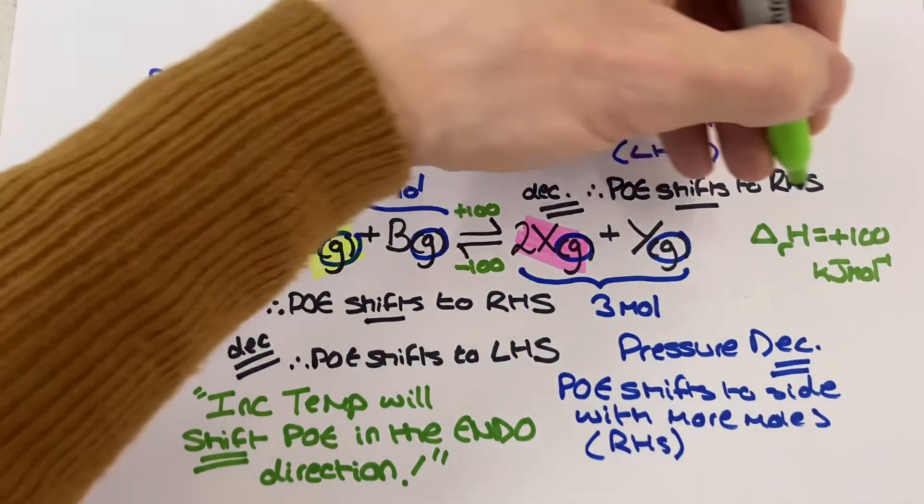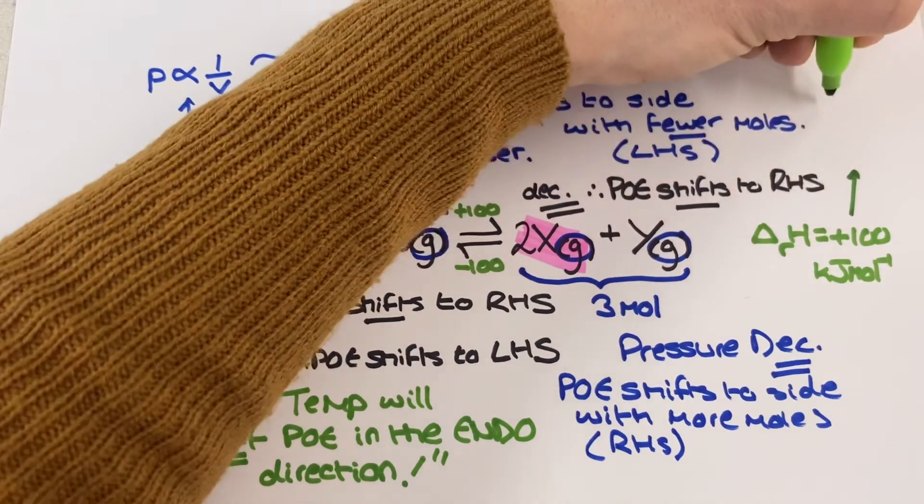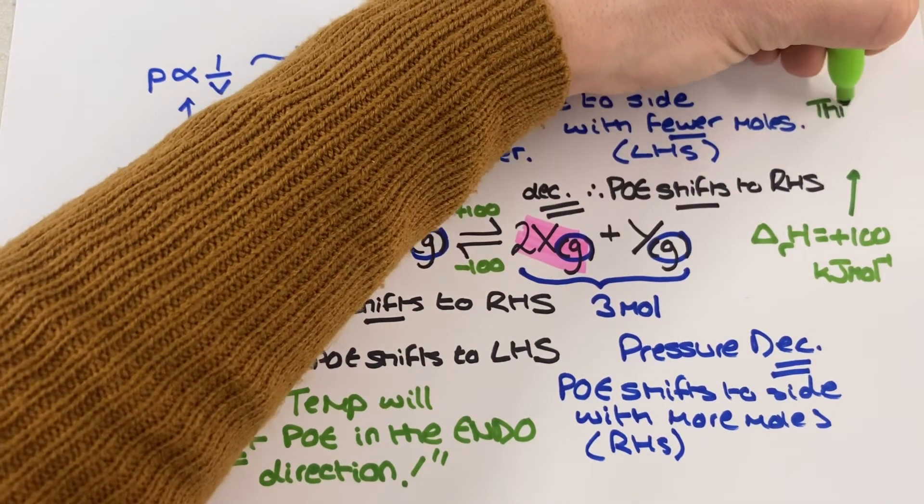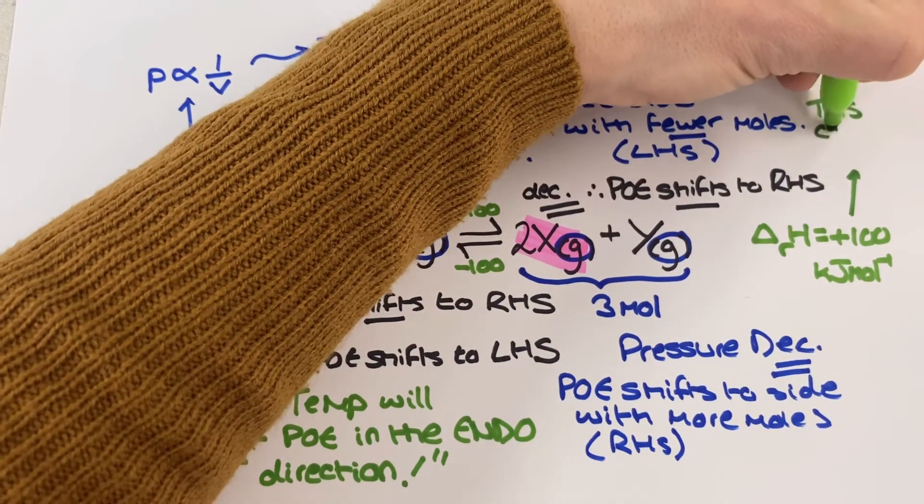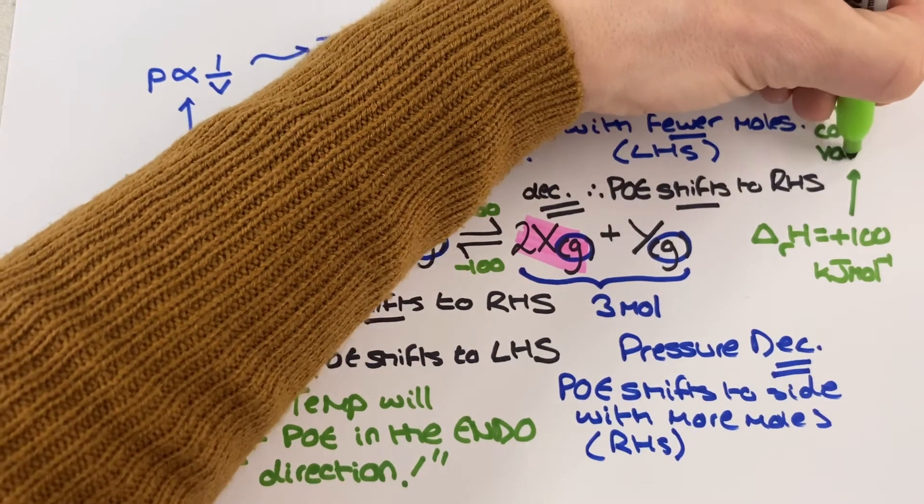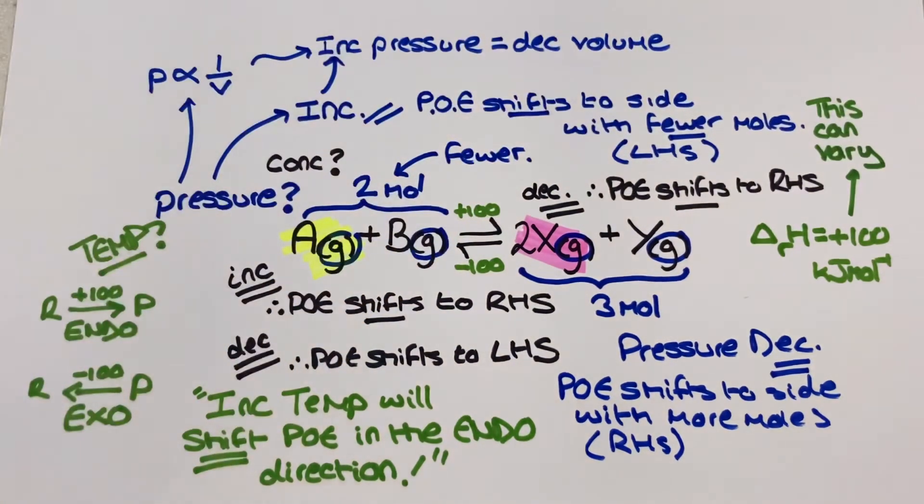Similarly when temperature is decreased the position of equilibrium will always shift in the exothermic direction to oppose the change and raise the temperature. Once again you would need to emphasize in your exam question answer whether this shift is to the left or to the right.